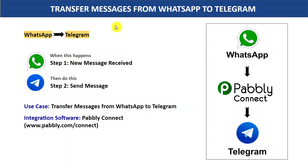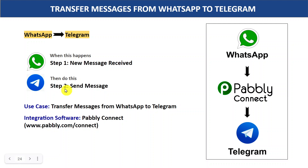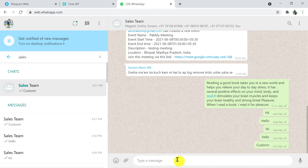In this video, we will learn how you can transfer your WhatsApp messages to your Telegram application automatically. WhatsApp and Telegram are two different messaging platforms with no direct connection between them, so we are going to integrate both applications with the help of an integration software called Pabbly Connect. This process requires no coding knowledge and any non-technical person can do it easily.